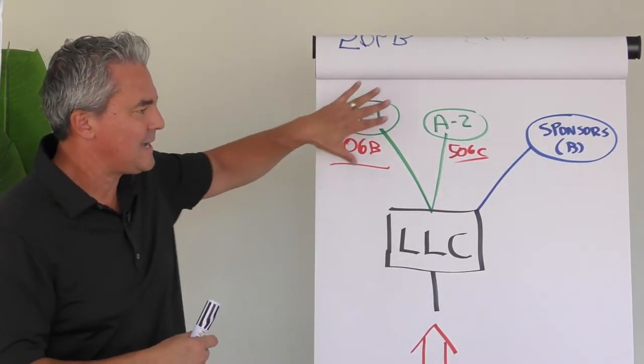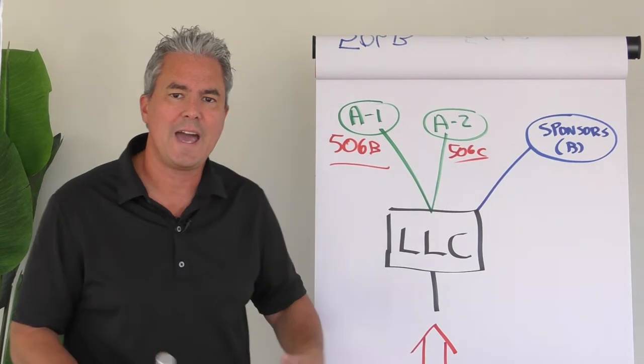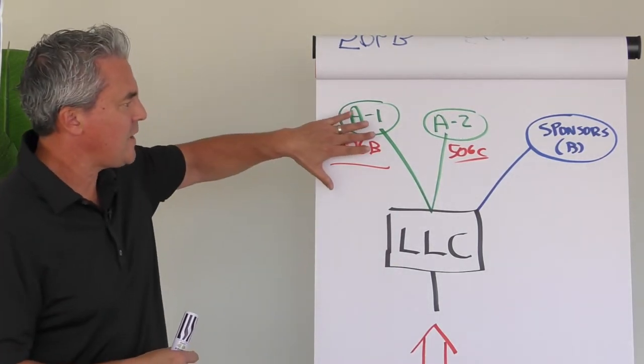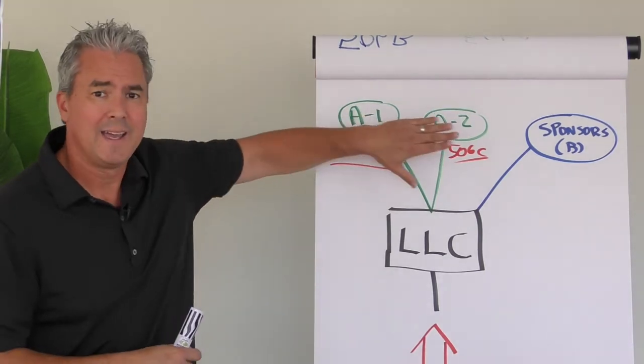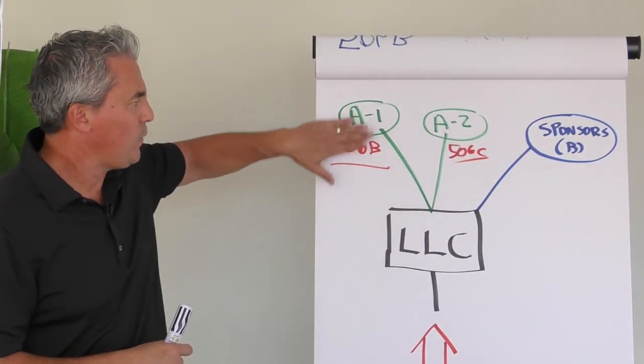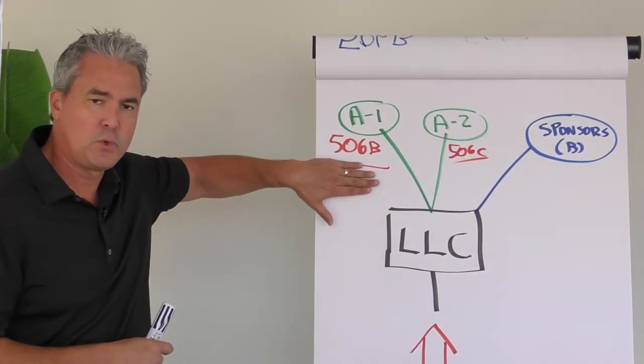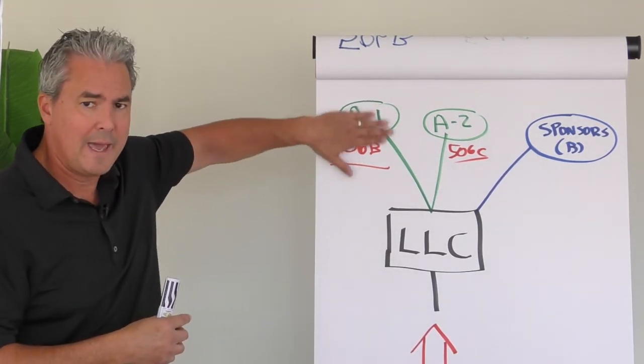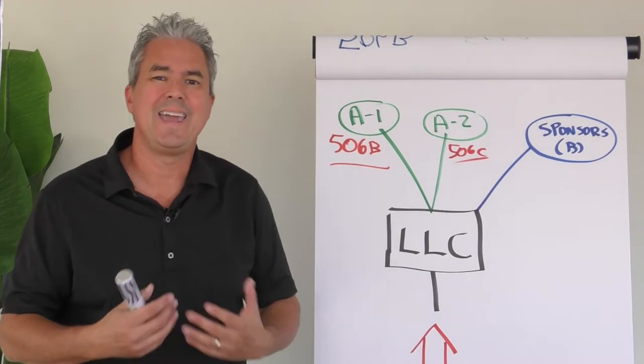But instead of just having class A and class B, which we usually have, class A being the investors and then class B being the sponsors, we actually create a class A1 and a class A2. The A1 is only issued pursuant to 506B, and then when we pivot, we stop selling A1 units and we start selling A2 units.